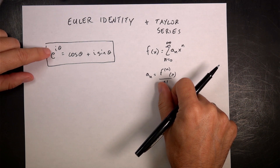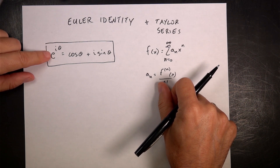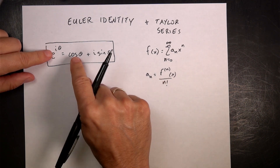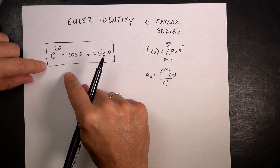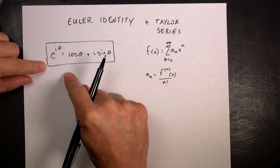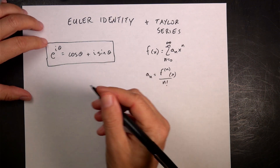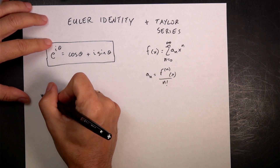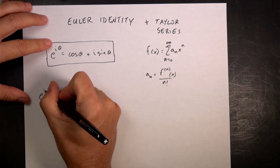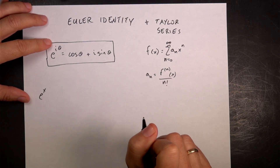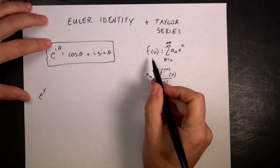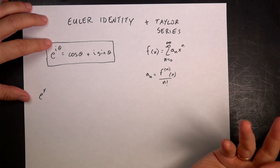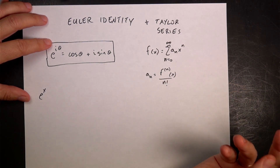So let's do Taylor series for these three functions and show that doing that proves the Euler identity is true. Let's start with e to the x — I want to write that as a Taylor series, so let's write the first four terms.